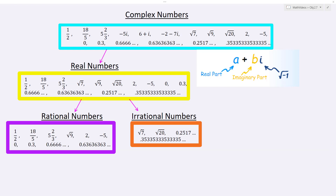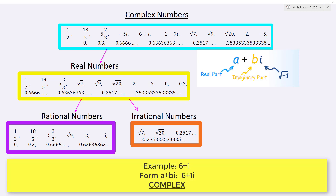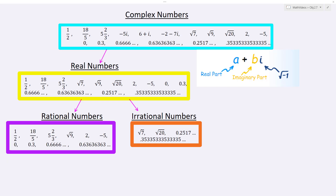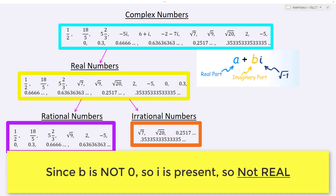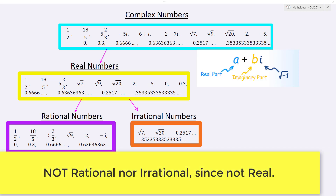Now let's look at a third example: 6 plus i. This is a complex number with an A value of 6 and a B value of 1. Since the B value is 1, it's definitely not a real number — for it to be real, the B value would have to be 0. You can tell because you see that i value. If you see an i value, you're definitely not real, and if you're not a real number, then you're definitely not rational or irrational, which are subsets of the real numbers.